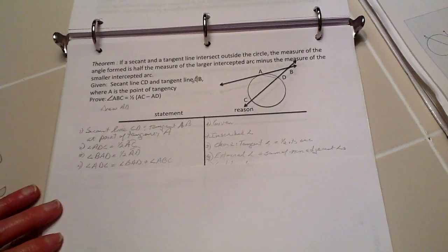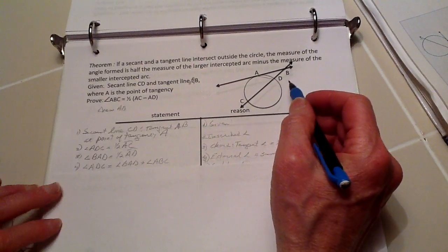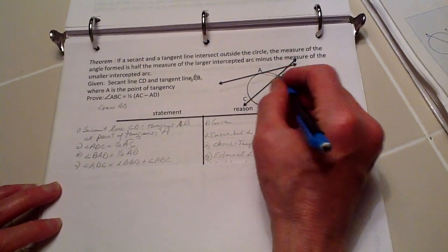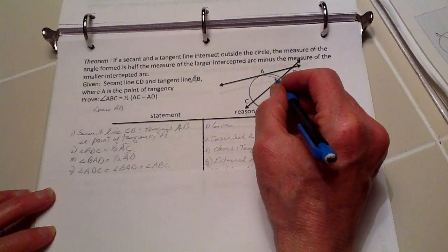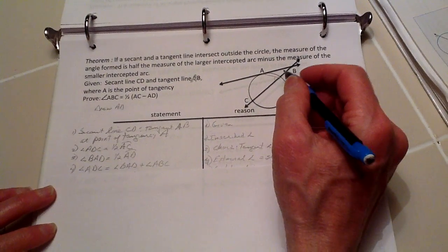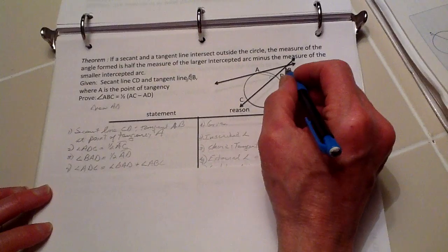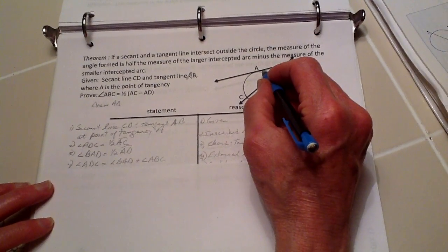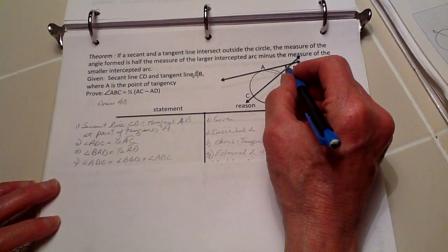That is one-half the arc. We also know now that this angle ADC is going to be equal to the addition of angle BAD plus angle ABC.